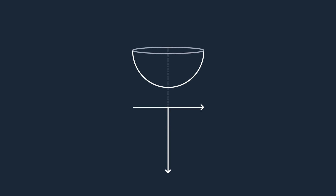The classic example of stability uses a marble and a bowl. In our first scenario, if the bowl is right-side up and the marble is inside, we can flick the marble, which will cause it to go up and down and all around the bowl, but it will eventually settle back to its original position.